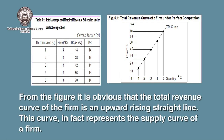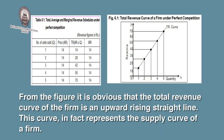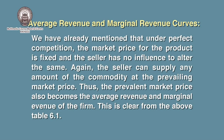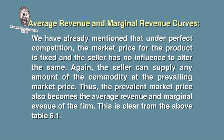When we plot this data in the figure, it is obvious that the total revenue curve of the firm is an upward rising straight line. This curve in fact represents the total supply of a firm. Now, regarding average revenue and marginal revenue curves: under perfect competition, the market price for the product is fixed, and the seller has no influence to alter it. The seller can supply any amount of the commodity at the prevailing market price. Thus, the prevailing market price also becomes the average revenue and marginal revenue of the firm.